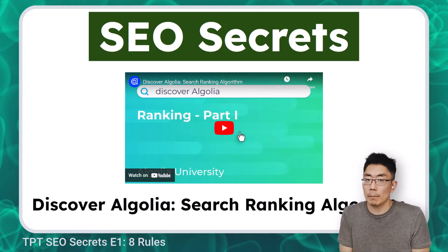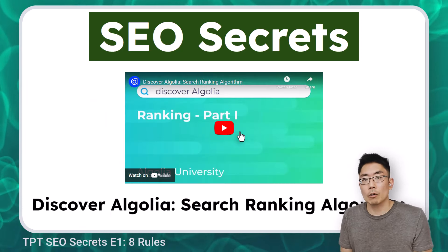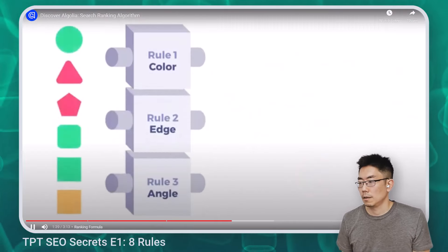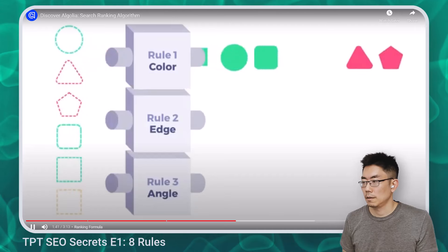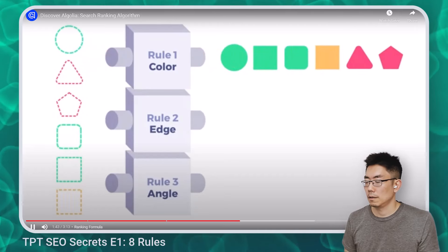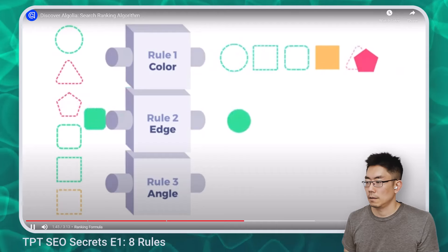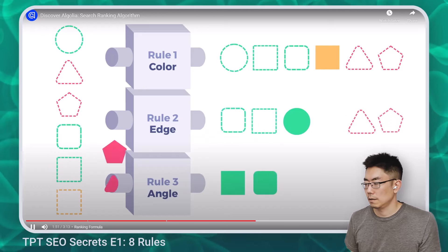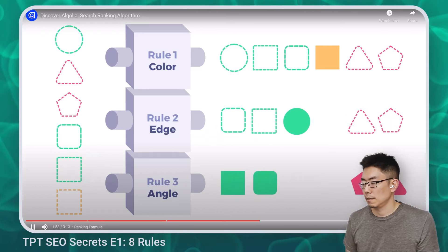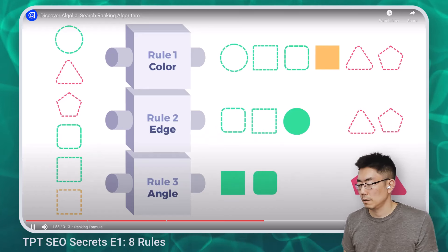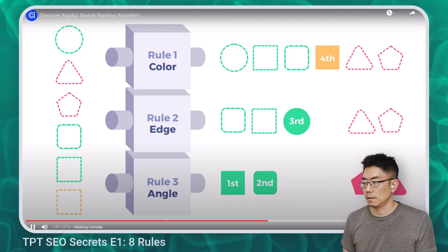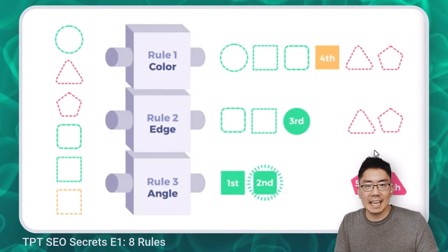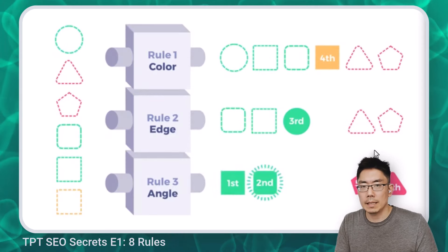So let's look at the ranking formula that TPT uses. Here's a video from Algolia explaining how their search engine works. Initially, all matching records are sorted according to the first criterion. If any records are tied, those are then sorted according to the second criterion. If there are still records tied, those are sorted further according to the third criterion, and so on until all ties are broken and each record in the result set has a distinct position. This is key to understanding TPT SEO.